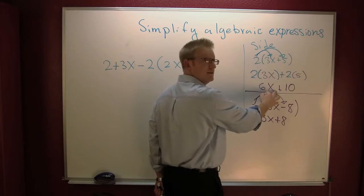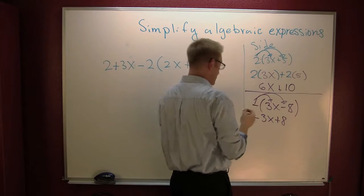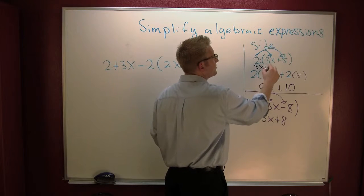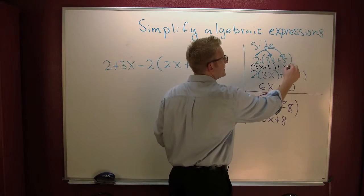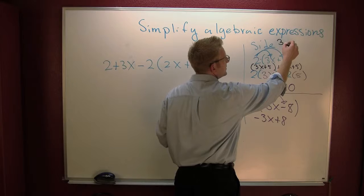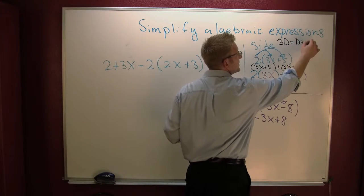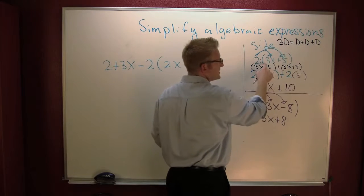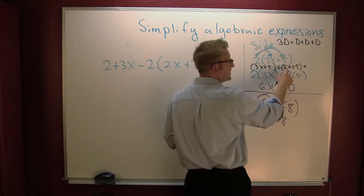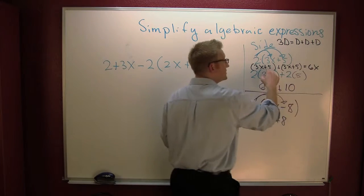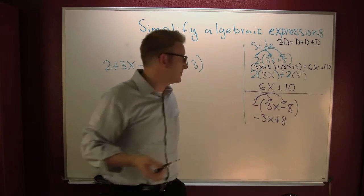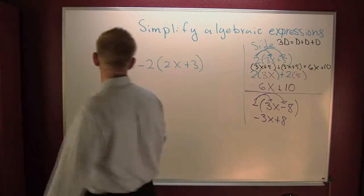A 2 on the outside doubles everything. We could actually write this as 3x + 5 plus 3x + 5 — just as you'd write 3d as d + d + d. Here the 'd' is that whole expression and we're making 2 copies. Then you gather, collect, and combine: here's 3x and there's 3x — that's 6x. Here's 5 and 5 — that's 10.